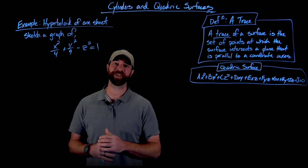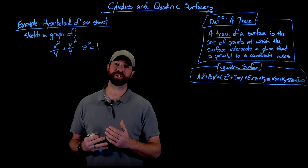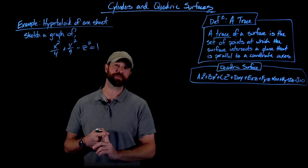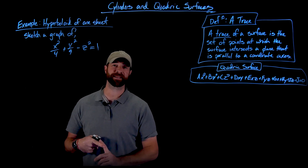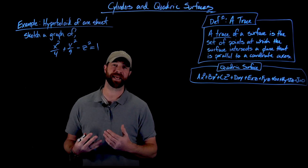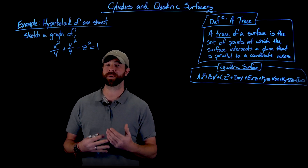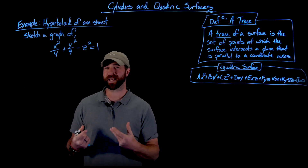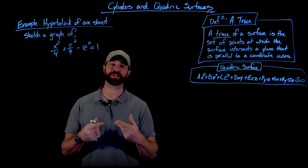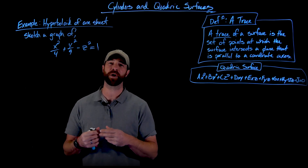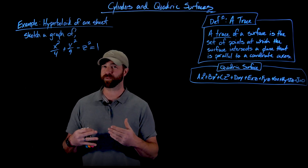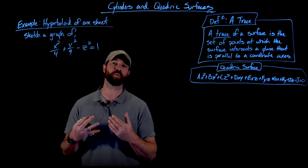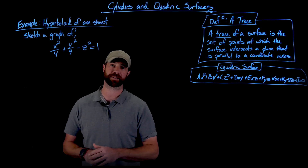Hey, welcome back. In this video we're going to continue the conversation of quadric surfaces. We're going to cover three different examples using exactly the same techniques as before — looking at intercepts and then looking at certain traces on the coordinate planes to get an idea of what these surfaces look like.